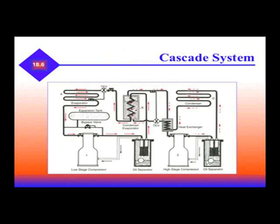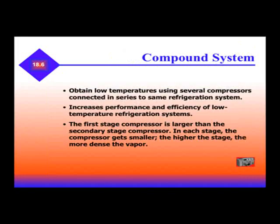We have our low stage and high stage, separated by a heat exchanger. The evaporator of your high stage unit cools the condenser, which is actually the condenser of the low stage compressor. The compound system obtains low temperatures using several compressors connected in series to the same refrigeration system, increasing performance and efficiency of low temperature refrigeration. The first stage compressor is larger than the second stage compressor; in each stage, the compressor gets smaller. The higher the stage, the more dense the vapor.